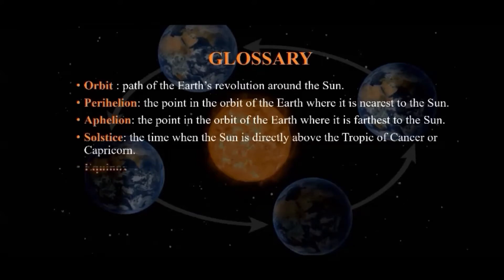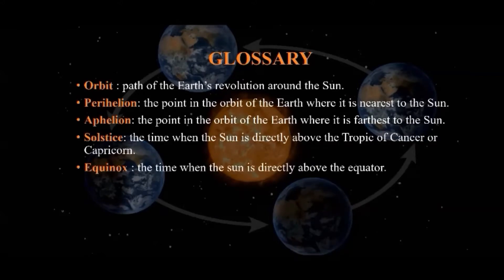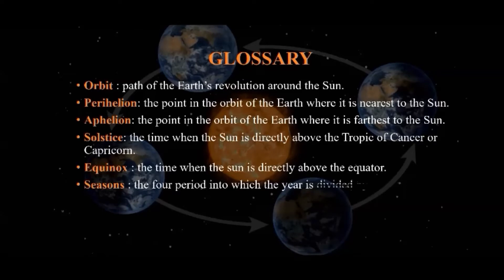Equinox — equinox is the time when the Sun is directly above the equator. Seasons — the four periods into which the year is divided by the solstices and equinoxes are termed as seasons.